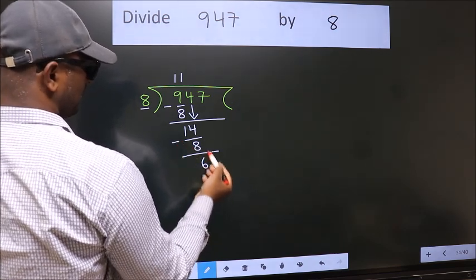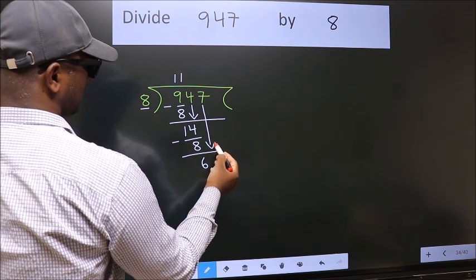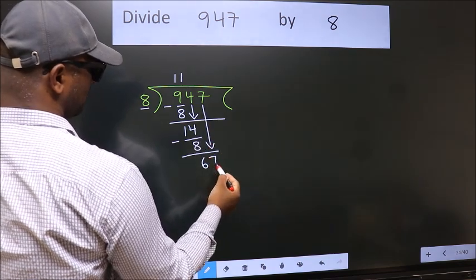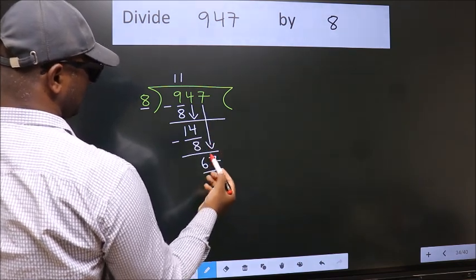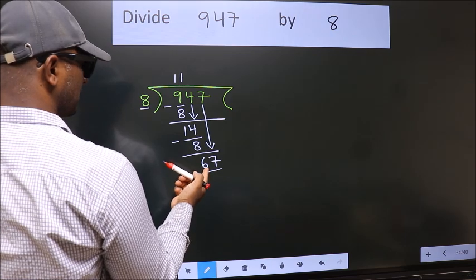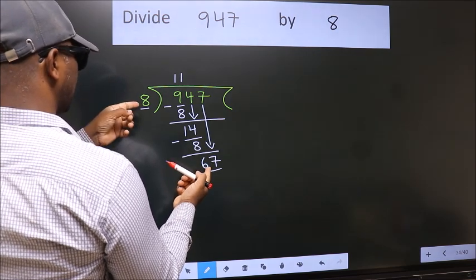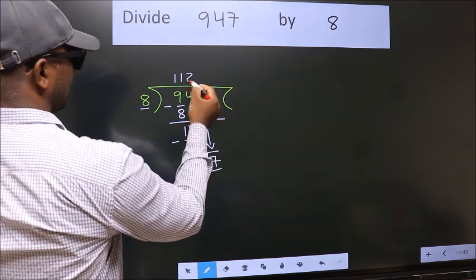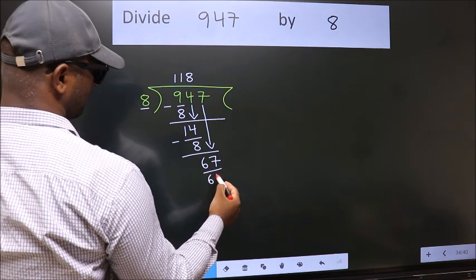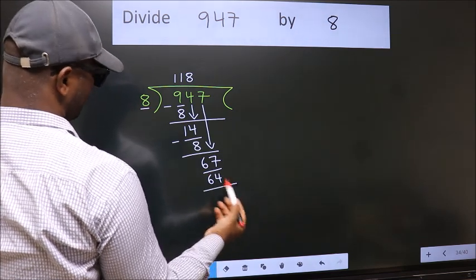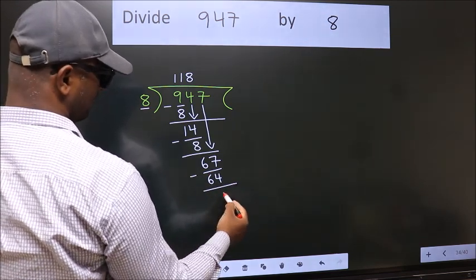After this, bring down the beside number. So 7 down. So 67. A number close to 67 in 8 table is 8 8s 64. Now we subtract. We get 3.